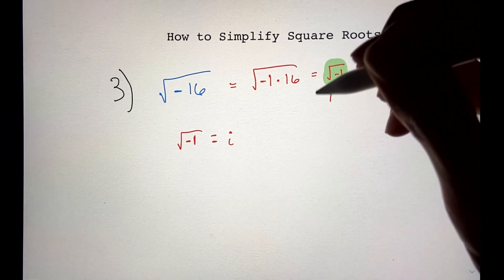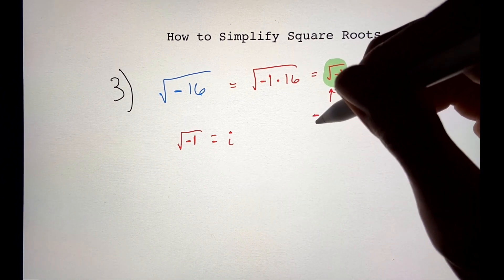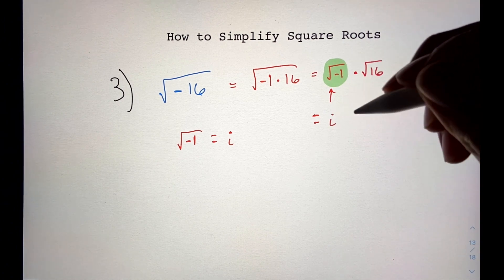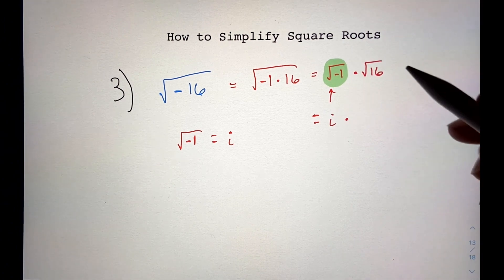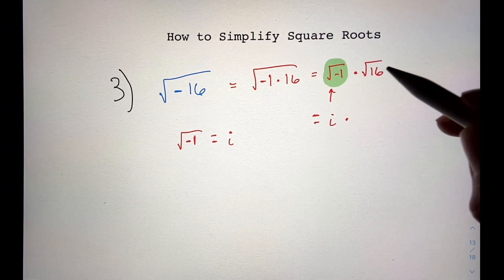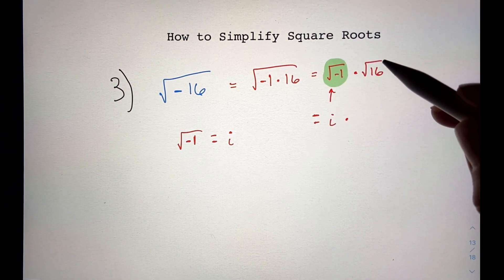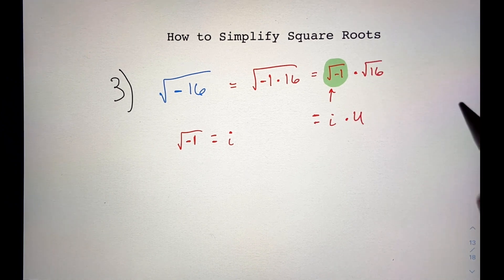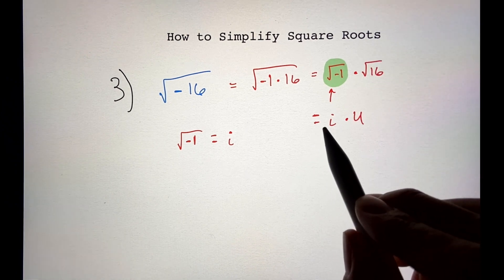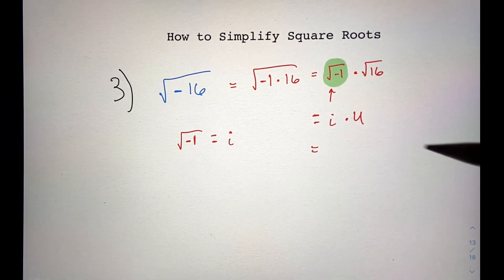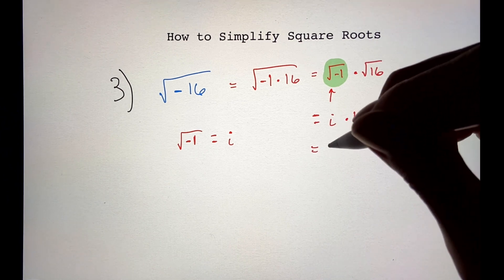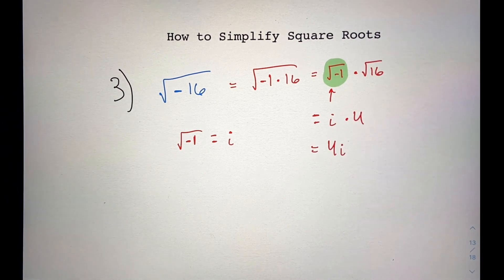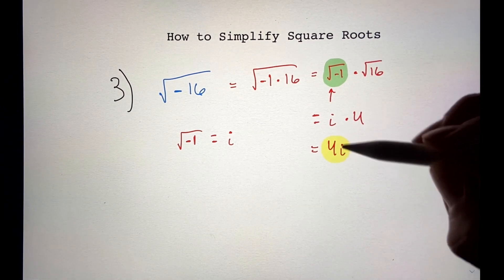So this expression is equal to i times the square root of 16. Since 16 is a perfect square, the square root of 16 is just 4. So this equals i times 4, and most people write the 4 in front, so this is just 4i. That's our answer.